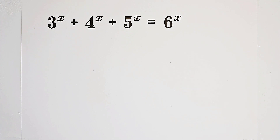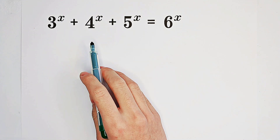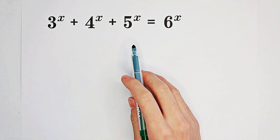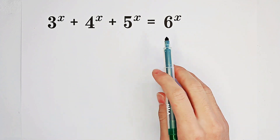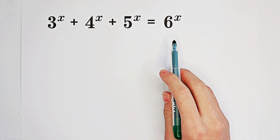Solve for x such that 3 to the power of x plus 4 to the power of x plus 5 to the power of x equals 6 to the power of x.